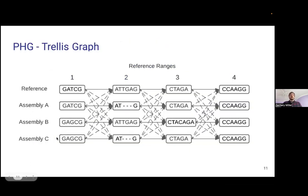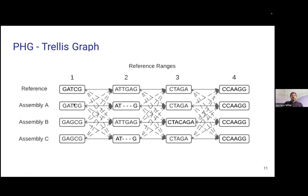What this ends up looking like when you actually apply it to sequence: we have a reference, we might have three or four assemblies — you can store up to 80 or so without any issue. We split these regions by some pre-known set of coordinates and extract out the sequence for each. For example, this reference has GAT, CG, ATT, GAG, CTAGA, and so on, extending until you fill up a chromosome. We have some variation: assembly A and C have some missing base pairs on alignment, and another has an insertion. So we represent it this way.